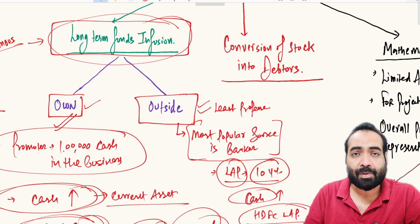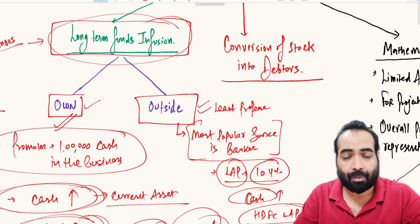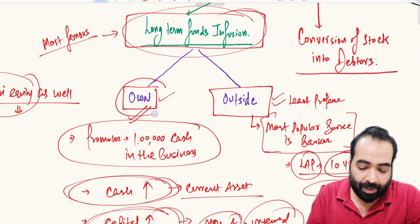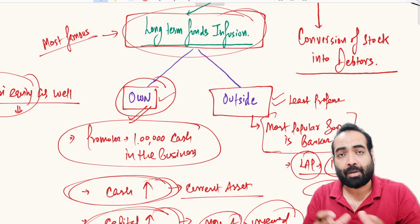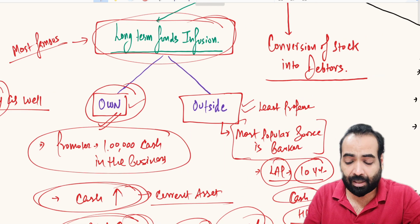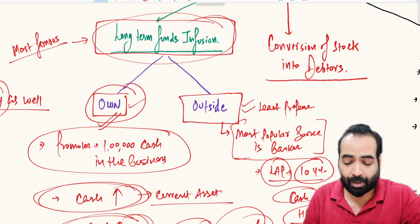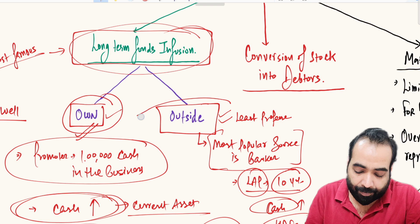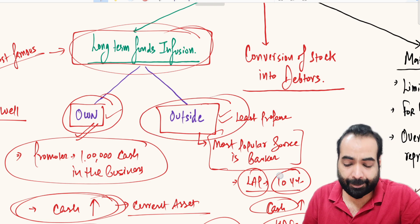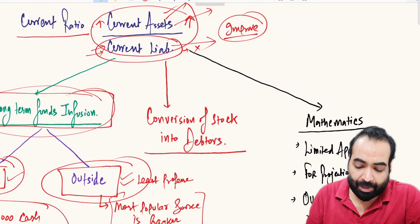This outside-borrowing approach is suggested in cases where the bank has overall comfort on the party and wants to fund the client, but the client doesn't have their own capital or quasi equity to infuse. Since the bank is very comfortable with the client and wants to onboard them, they may accept these outside funds as part of long-term infusion in the business.